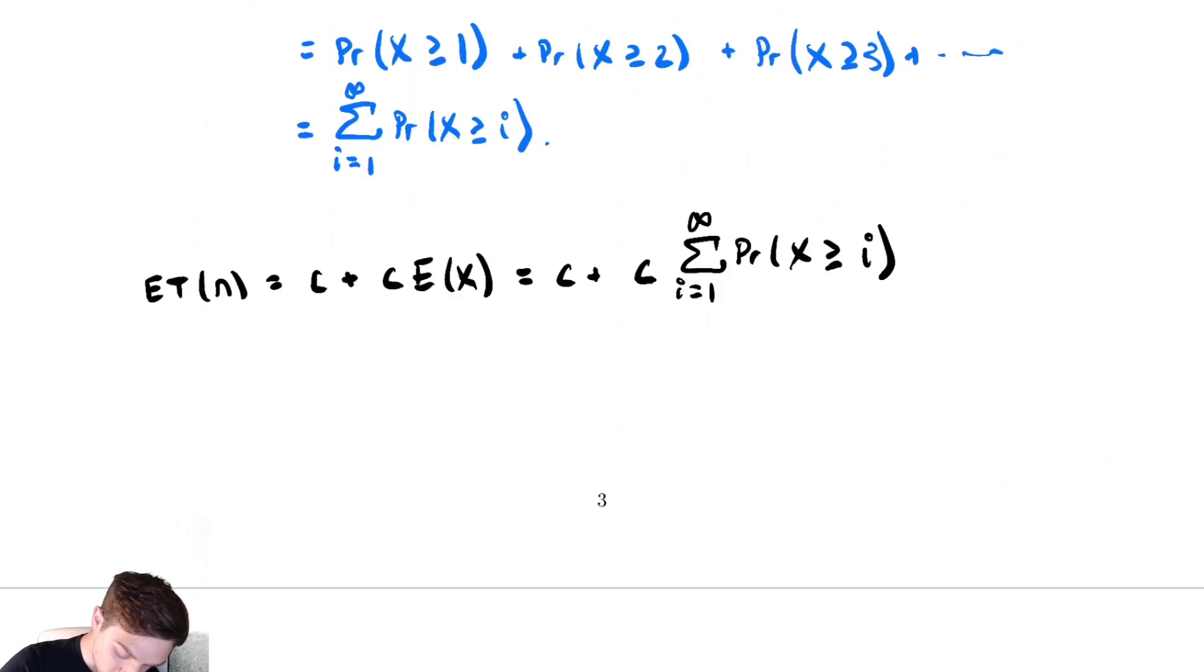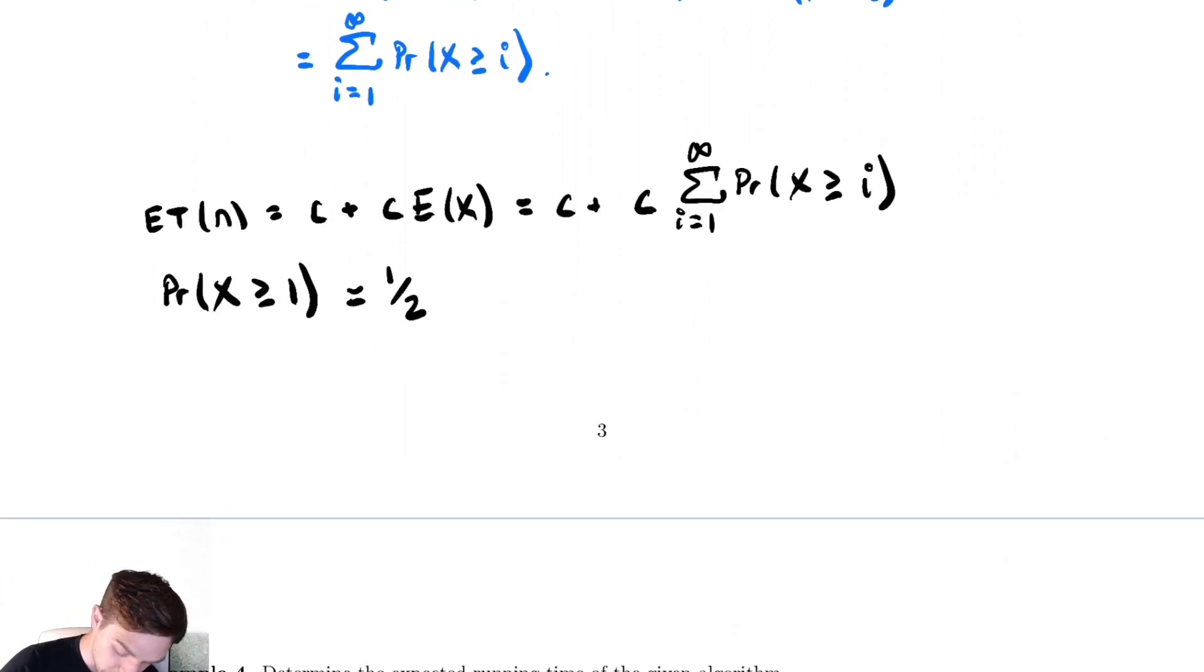So what is the probability that x is greater than or equal to 1? That means we flipped at least 1 heads. In order for that to be true, we need to flip the first heads. That's 1 half of the time. And then there's all of those other possibilities afterwards, but in order to have at least 1, it's half of the time. In order to have x greater than or equal to 2, that's all of the cases where I flip 2 heads back to back. Well, the probability of 1 heads is 1 over 2. The probability of another heads, I multiply by 1 over 2. Those are independent random events.